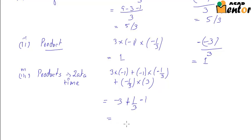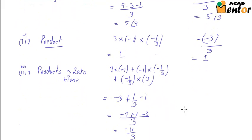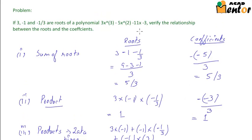Taking 1/3 as common, this becomes minus 9 plus 1 minus 3, giving minus 11/3. Using the coefficients, the formula is the coefficient of x divided by the coefficient of x³, so we take minus 11 and 3, giving minus 11/3.